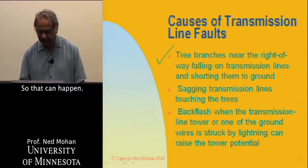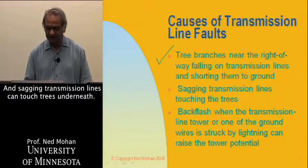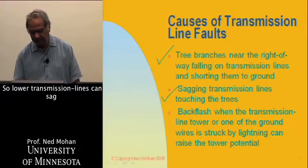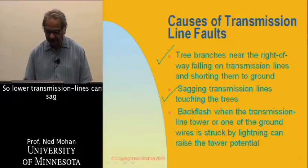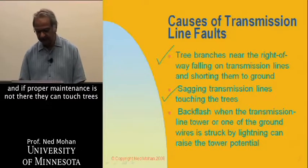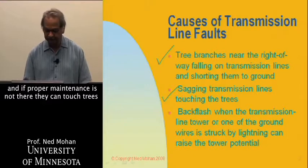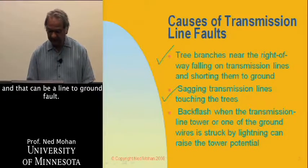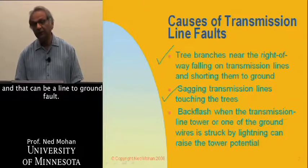Sagging transmission lines can touch trees underneath. Overloaded transmission lines can sag, and if proper maintenance is not there, they can touch trees and that can be a line to ground fault.